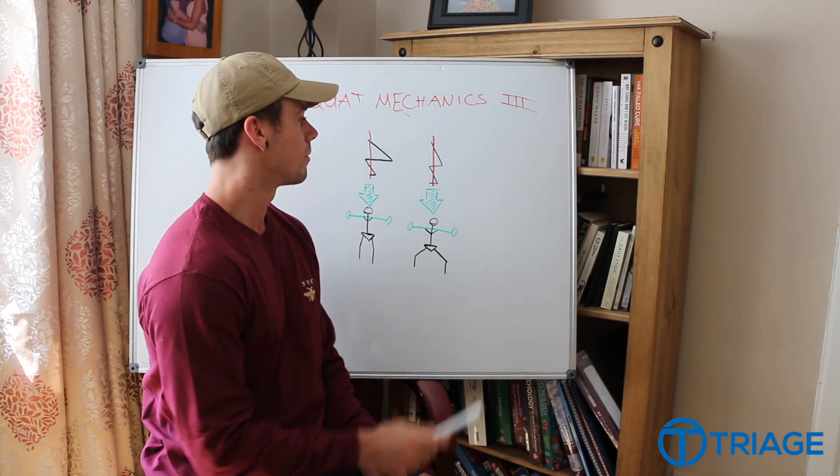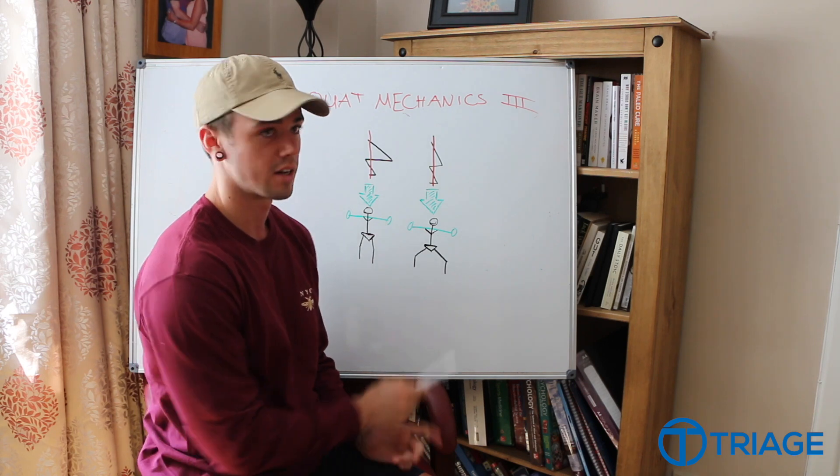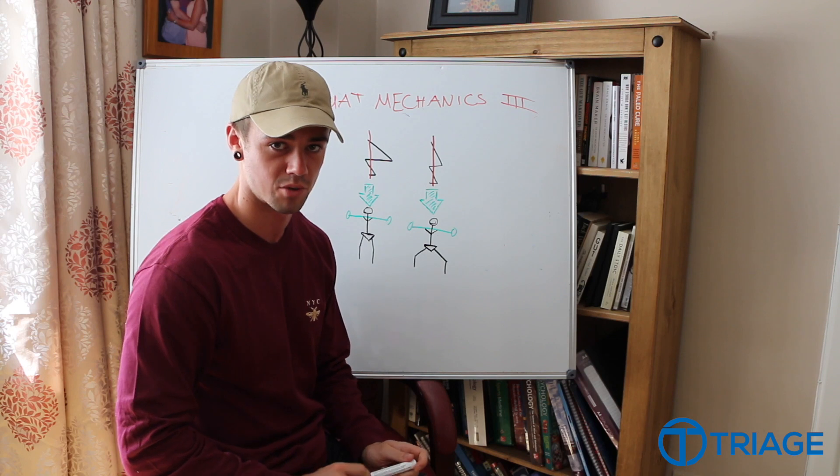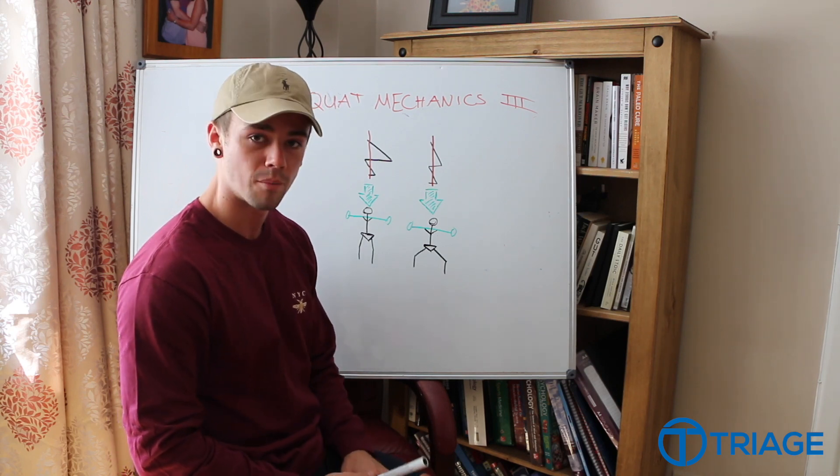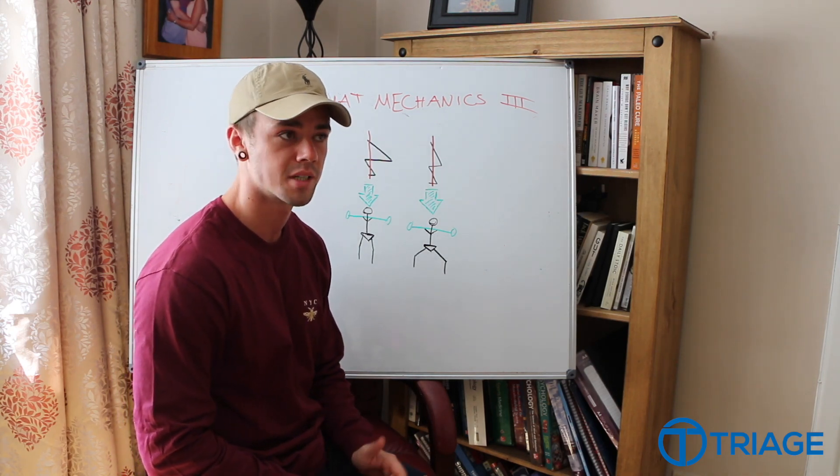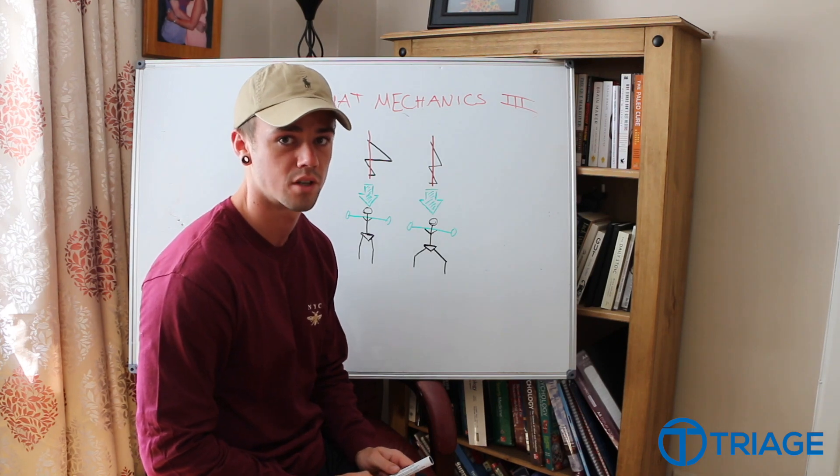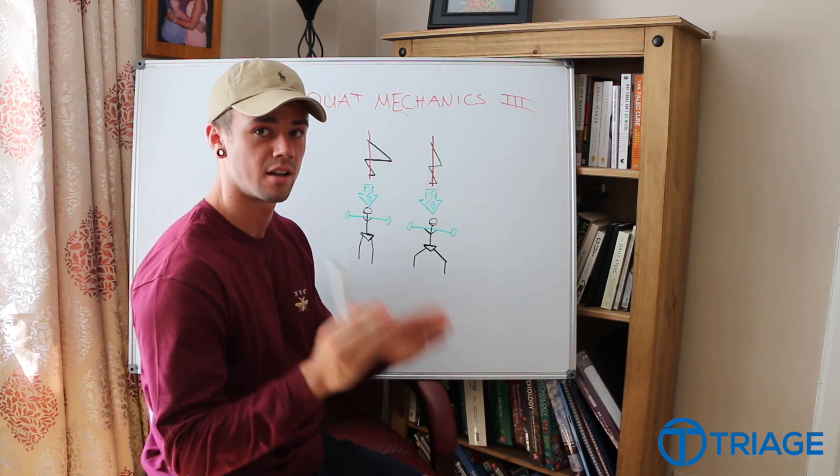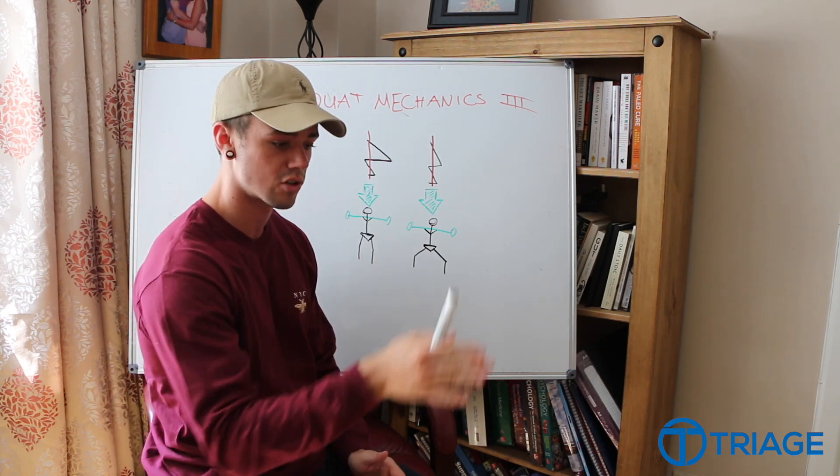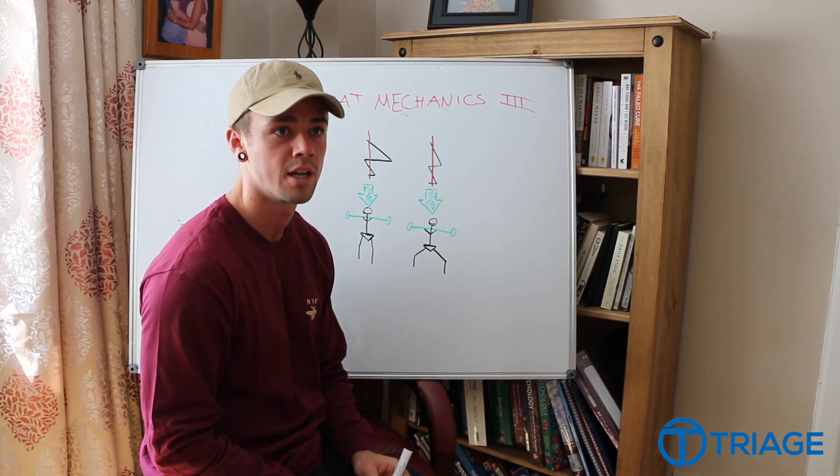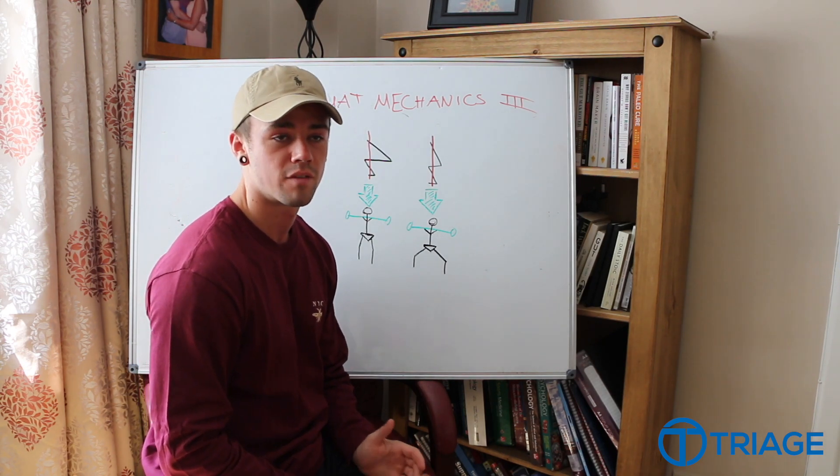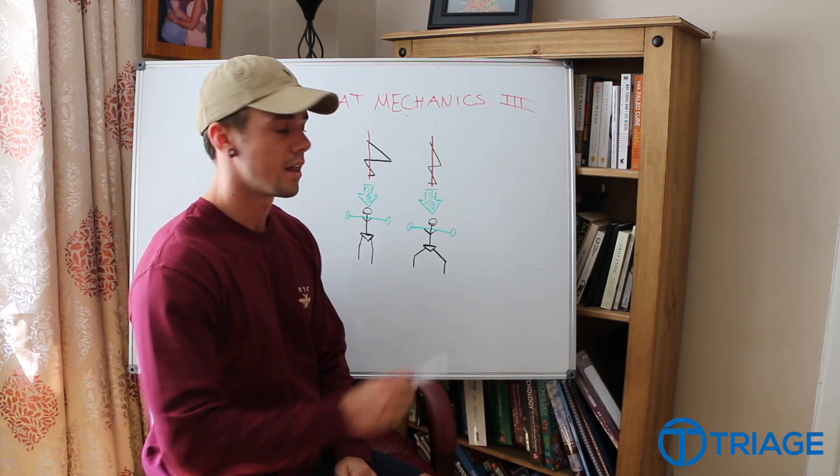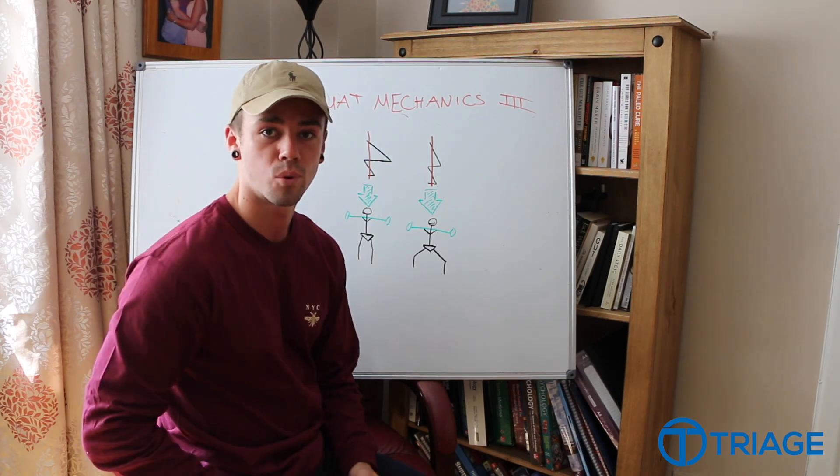What we've got is our person with long femurs here with their typical kind of leaned over squat, limited in the depth they can achieve as a result of that. But what we're looking at then is the front view. How was that person squatting from the front? If you are like this person and your legs are right in front of you when you're doing a squat, you're letting your knees travel forward, your feet are pointing forward, and you've got those longer femurs, then it's going to be a far greater chance of that being a limiting factor.